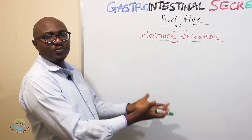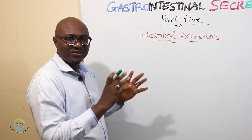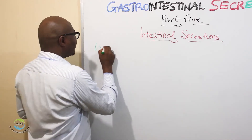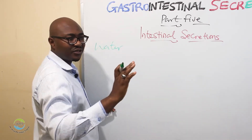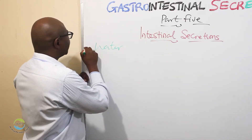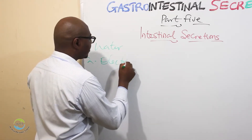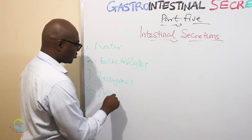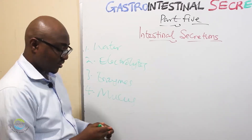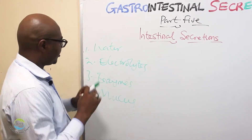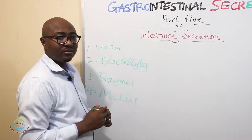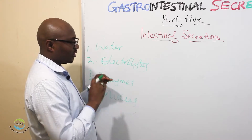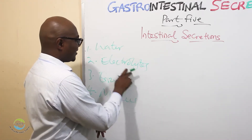So, intestinal secretion — small intestinal secretion and large intestinal secretion. What do they secrete? As we have said, all secretions, apart from biliary secretion which doesn't contain enzymes, they contain water, electrolytes, and enzymes mainly. They can also have mucus. The same applies in intestinal secretions, just that they play a minor role, especially as it concerns enzymatic secretion.